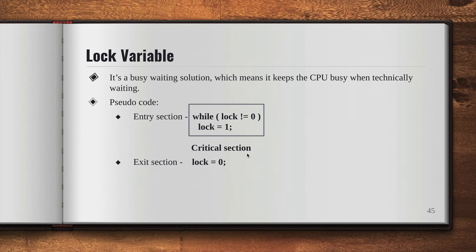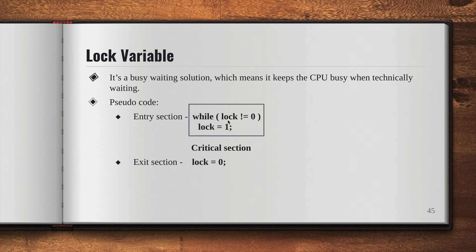This lock variable synchronization scheme is for multiple processes. If any other process, say P2, comes in while P1 is executing, the lock value is already one. The condition 'lock not equal to zero' is met, so P2 stays inside the while loop and cannot enter the critical section or move to the next statement.